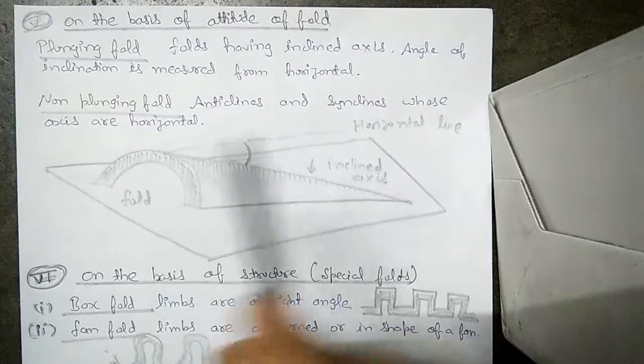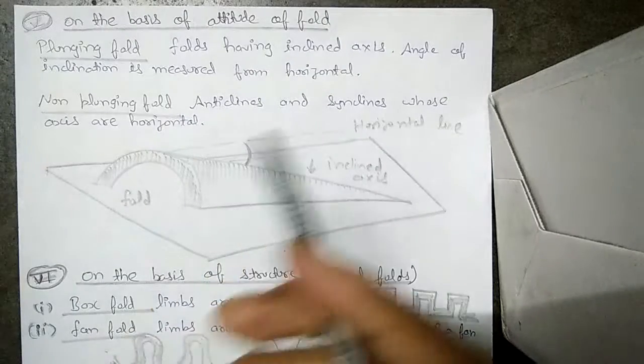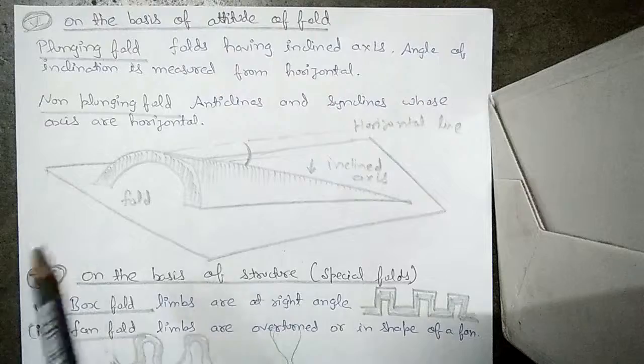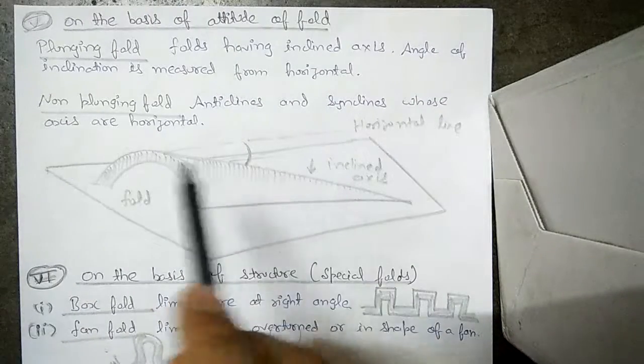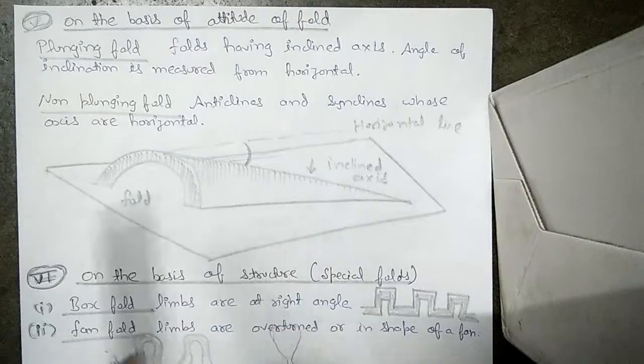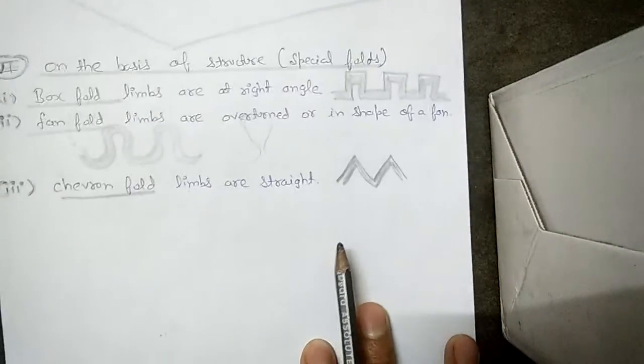What is a non-plunging fold? Anticlines and synclines whose axes are horizontal. Such kind of anticlines and synclines whose axes are horizontal they are called non-plunging fold. Those don't have a plunge. If it is straight then it is called non-plunge.